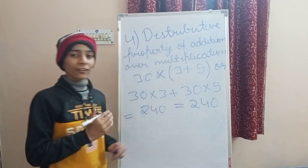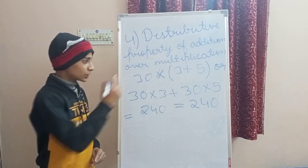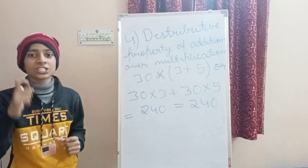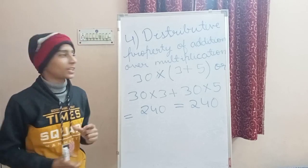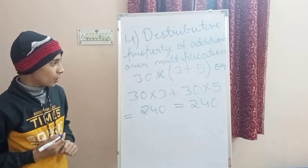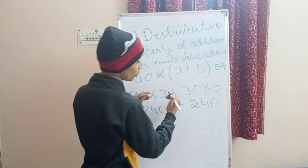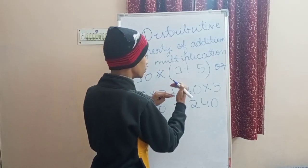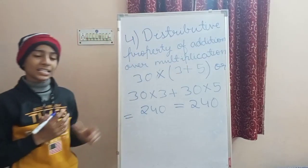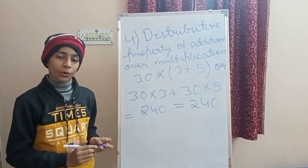The answer of both methods is the same — 240. So we can follow either method. This is called the distributive property of addition over multiplication. Whether we expand or keep the bracket, the answer will come out the same.